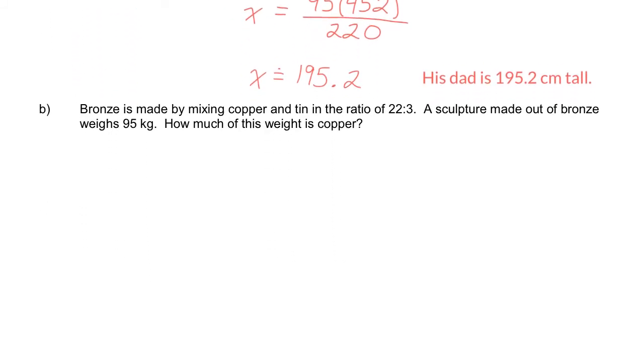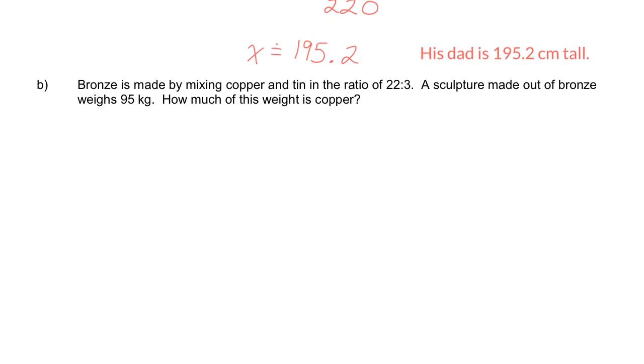Bronze is made by mixing copper and tin in the ratio of 22 to 3. I'm going to stop there for a second. What does this mean? It means for every 22 parts of copper, there are three parts tin. A sculpture made out of bronze weighs 95 kilograms. How much of this weight is copper? Okay, so we need to understand what we're doing here. There's a comparison. There's a ratio of copper to tin, and that's 22 to 3. So I'll write that down.